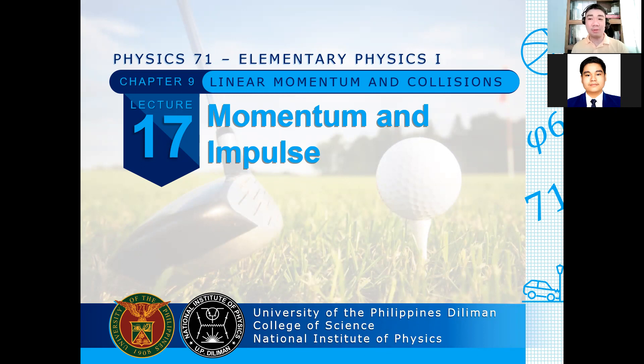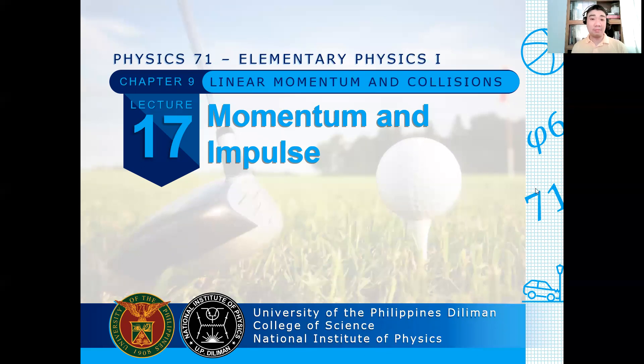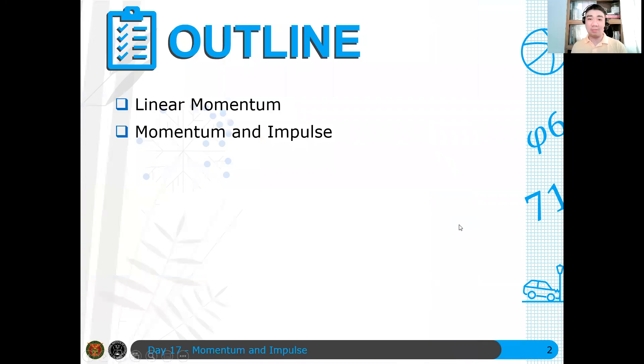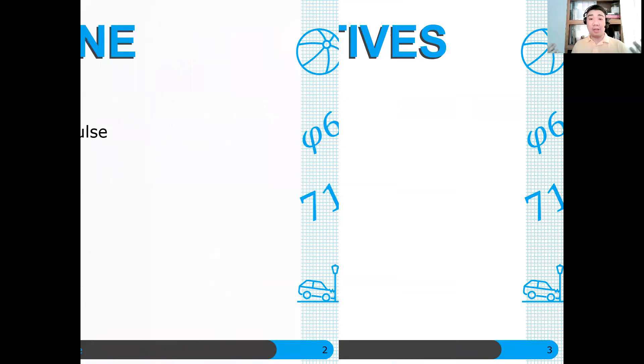Okay, so the next three lectures will be about momentum and impulse. So here's an outline of this discussion. The first one is we will define what linear momentum or momentum is, and then we discuss what momentum and impulse is. So if there's a change in the momentum of the system, you call it as the impulse imparted on a system. Okay, so at the end of the session, you should be able to first define the linear momentum of a particle.